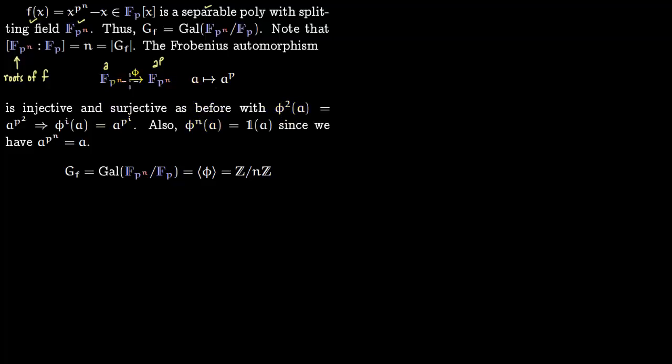If you apply phi twice to a, first time you get a^p, then you get a^(p^2). If you apply i times you get a^(p^i). If you apply n times you get a^(p^n).